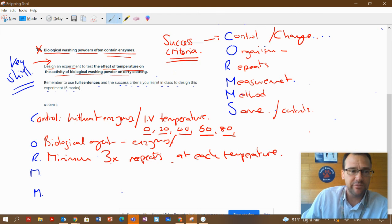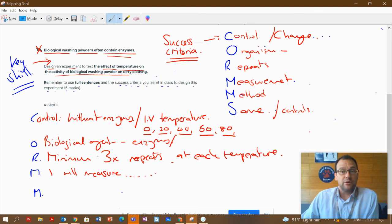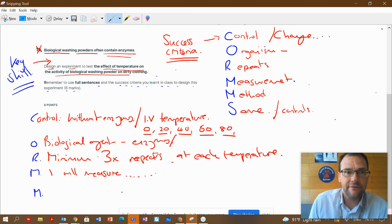M, so measurement. I will measure, that's how you start the sentence. A lot of people said I will measure the time it takes for the fabric or clothing to become clean. Fine, brilliant. You could have said I will measure the cleanliness of the clothing after two minutes. That's fine as well.